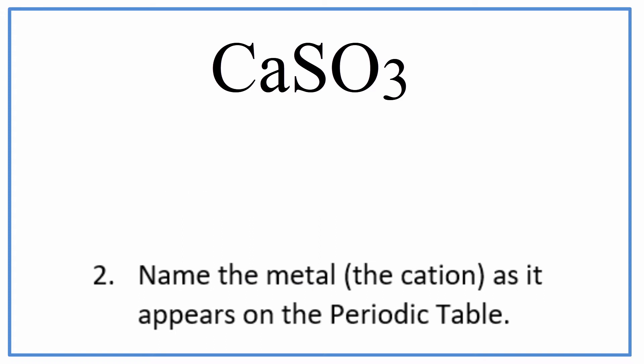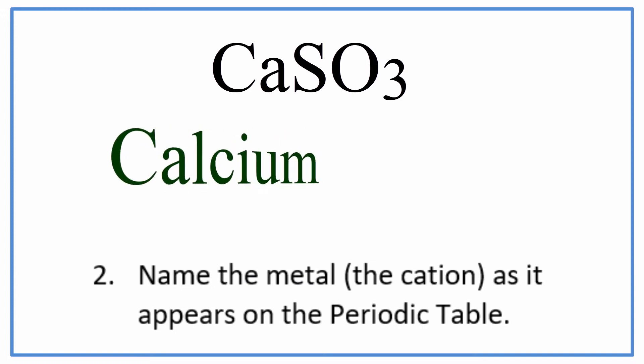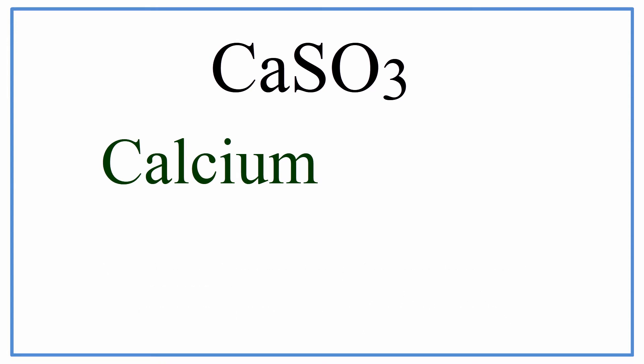Next, we need to write the name of the metal as we find it on the periodic table. For Ca, it's calcium. So we have the first part of the name for CaSO3.